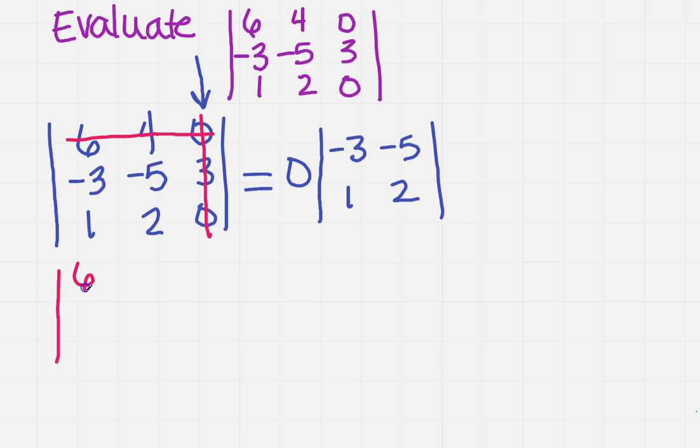So I'm going to have 6, -3, 1, 4, -5, 2, 0, 3, and 0.